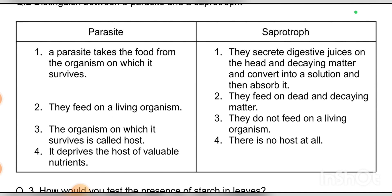Number two: a parasite feeds on a living organism, whereas a saprotroph feeds on dead and decaying matter. Number three: the organism on which a parasite survives is called the host. Number four: the parasite deprives the host of valuable nutrients, while a saprotroph has no host at all.